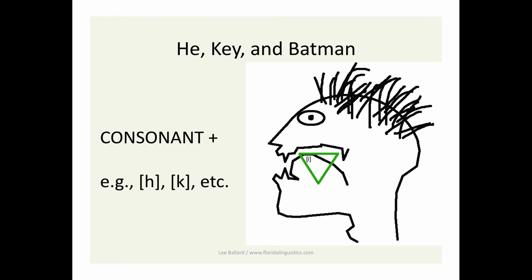This h sound is called a glottal fricative. A fricative means the air passes through and is not completely stopped. Glottal means that h is pronounced at the glottis. But there's also a glottal stop in English, like in uh-oh or batman.